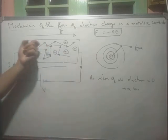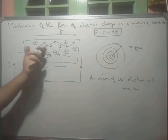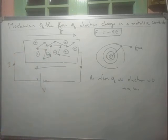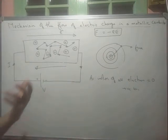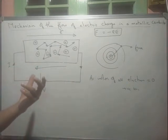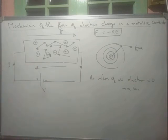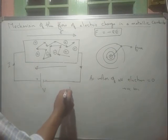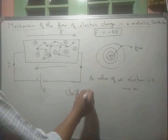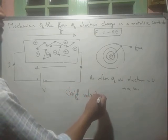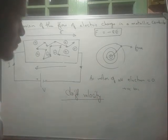Since the electrons are drifted towards the positive terminal, each free electron possesses what we call a drift velocity. We will look at drift velocity in the next video.